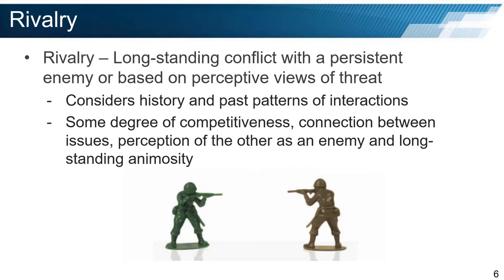Rivalry. Rivalry is a long-standing conflict with a persistent enemy. Valeriano and Maness examined the interactions between rival states as these interactions are often the most contentious in the international system. The animosity of rivals often builds for centuries, to the point where a rival state is willing to hurt itself in order to hurt its rival even more. The authors argue that if the cyber domain is as dangerous as rhetoric dictates, then they should see evidence among rival states of malicious cyber activity with devastating effects. The fact that we have not seen such disruptive interactions lends weight to Valeriano and Maness's theory of restraint, which we will cover later in this lesson.